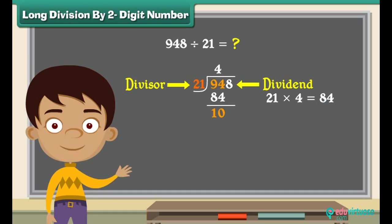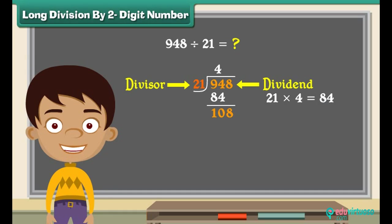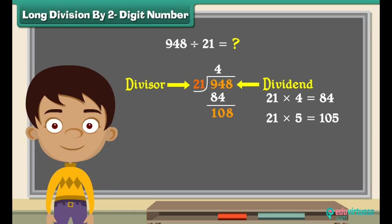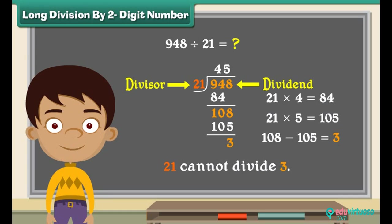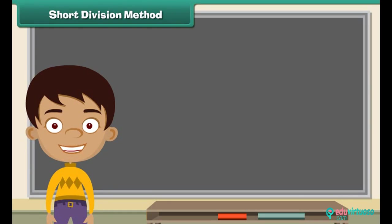Go to the next number in the dividend — the next number is eight. Drag the number down; the number becomes one hundred eight. Now divide the new number one hundred eight by twenty-one: twenty-one fives equal one hundred five. Place five above and the answer under one hundred eight. Subtract one hundred five from one hundred eight — the answer is three. Twenty-one cannot divide three, so three is the remainder and forty-five is the quotient.